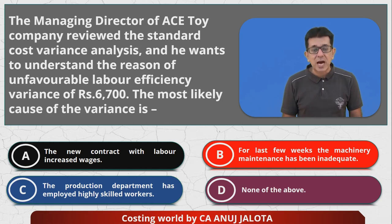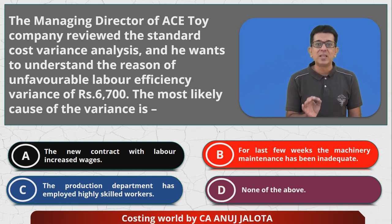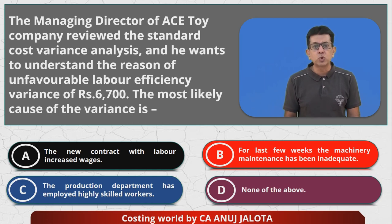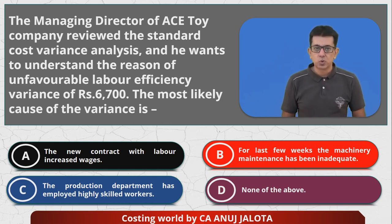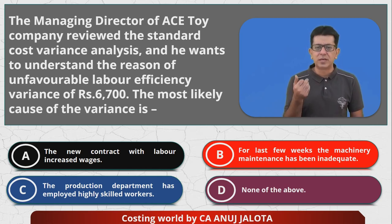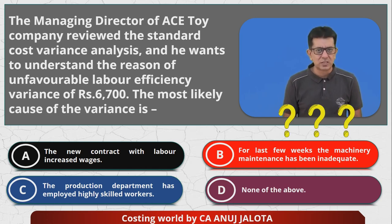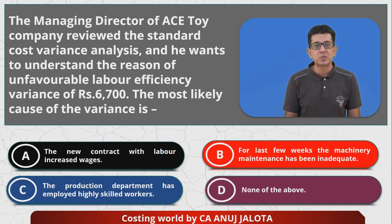Let's look at option B. For the last few weeks, machine maintenance has been inadequate. If you don't maintain machines properly, workers using those machines for production will be forced to work slower. If they work slower, their efficiency will be bad and the variance is going to be adverse. So out of A, B, C, and D, the answer is B. D cannot be the answer because B is the answer.